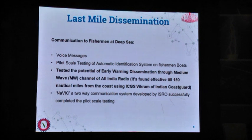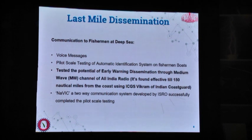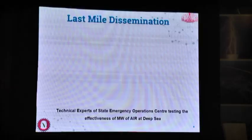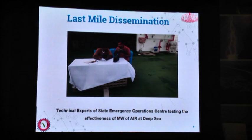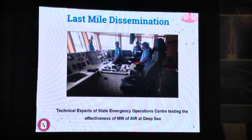Coming to communication with fishermen at deep sea, we have tested the NAVIC system — a two-way communication system — which will be more effective in getting feedback from fishermen themselves. We also tested early warning dissemination through the medium wave channel of All India Radio, which is found to be very effective up to 150 nautical miles from the coast. The Coast Guard ship ICGS Vikram assisted the state government in this testing. It is a very low-cost medium for disseminating warning messages to fishermen in deep sea, and we look forward to implementing it on a large scale.